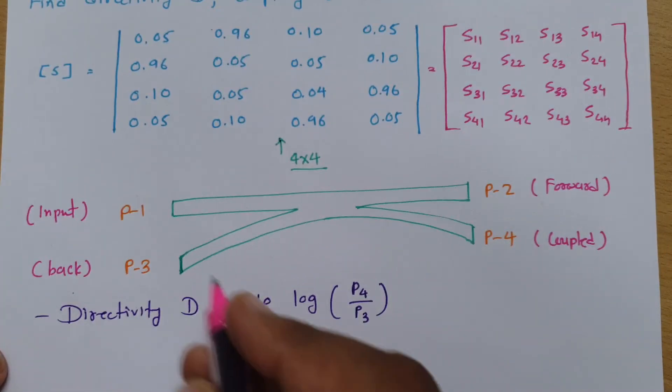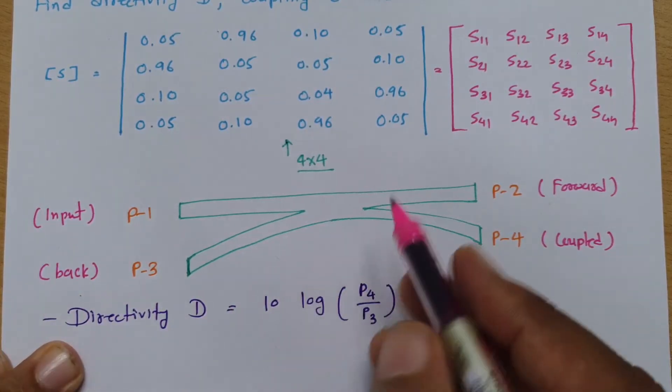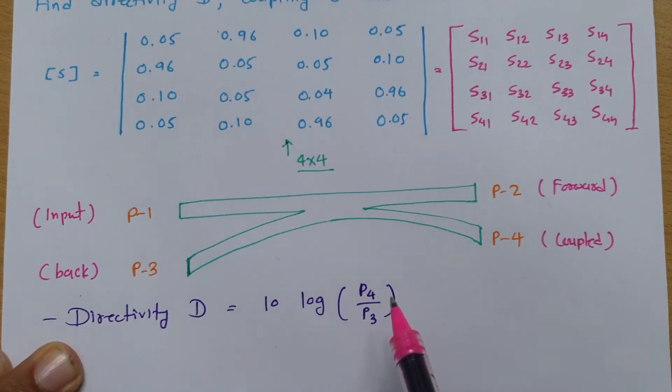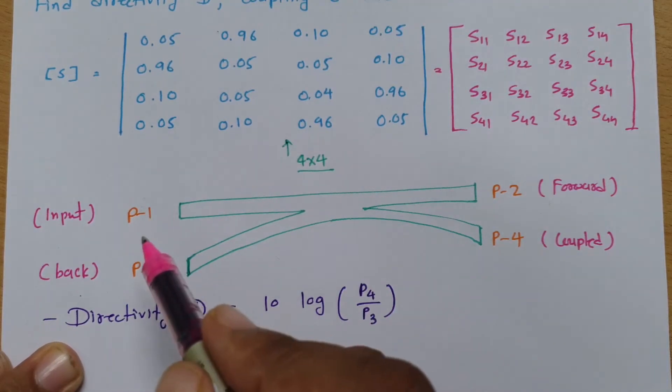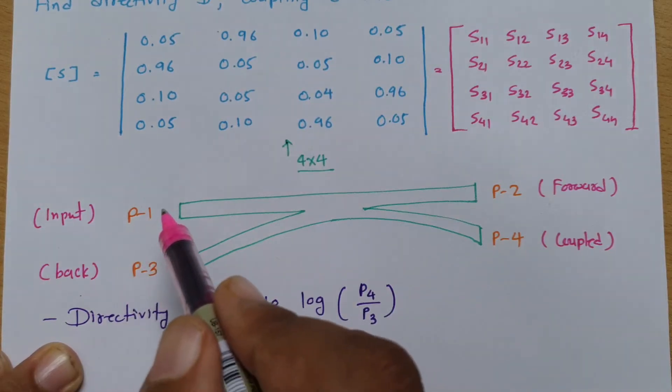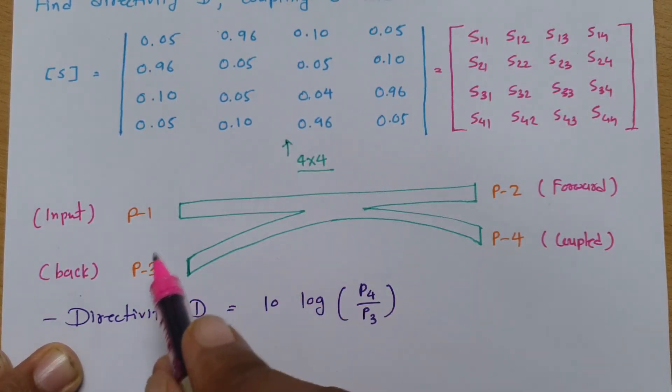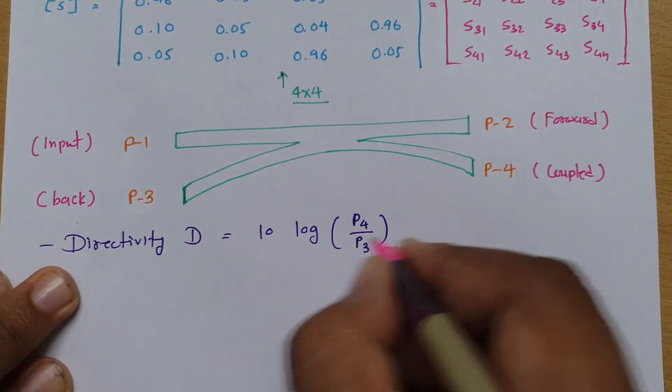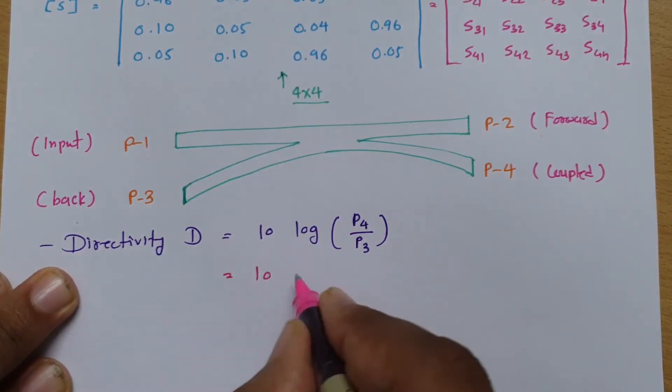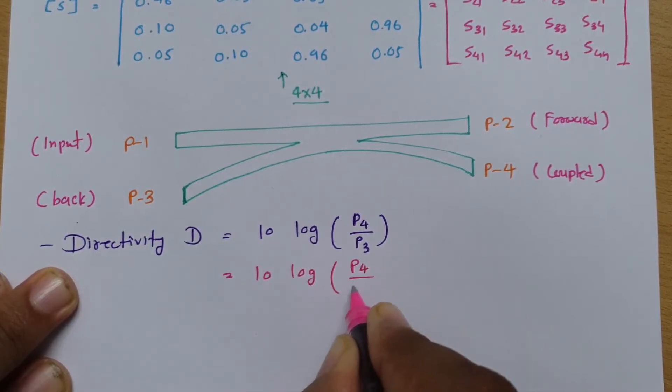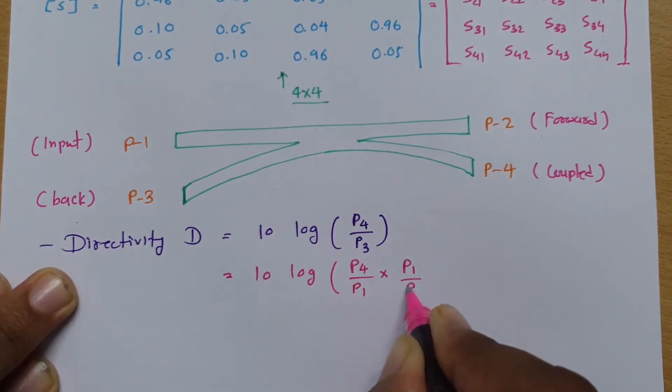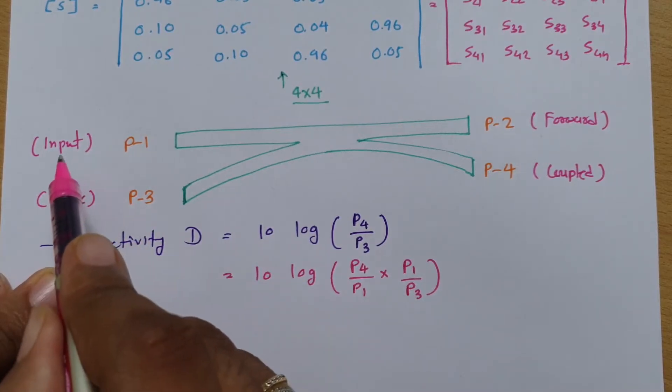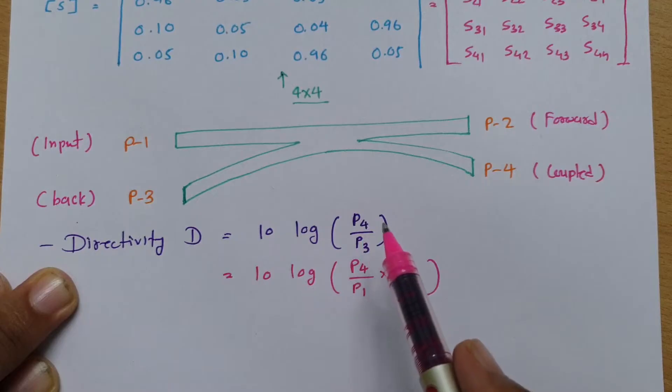One thing we need to understand: here we have considered my input port is P1 port. So we cannot place scattering matrix data as we have it based on P3, P4 - we need to place that with respect to P1. So I need to do an adjustment over here in this calculation. Now I will calculate that with respect to P1. To have it, I will multiply P1 and divide P1. The reason is I have considered my input port is P1, so I cannot place directly scattering matrix data as 3 and 4. It has to be depending on P1 port.